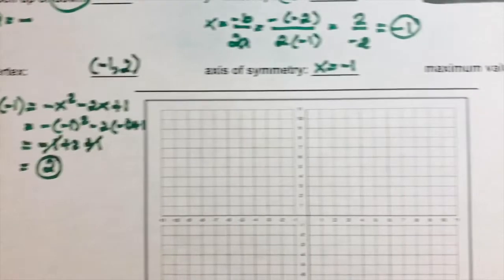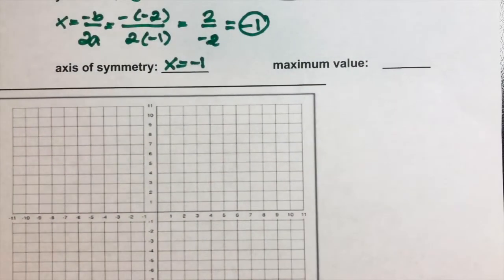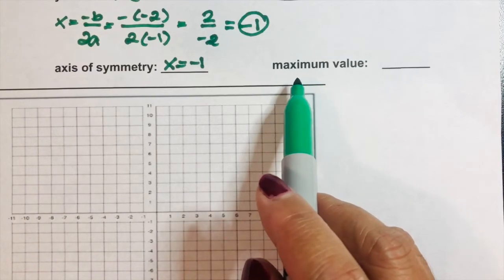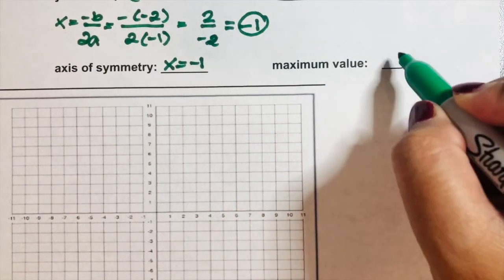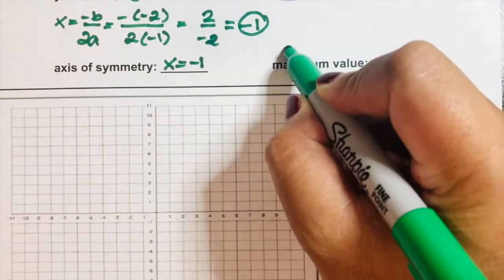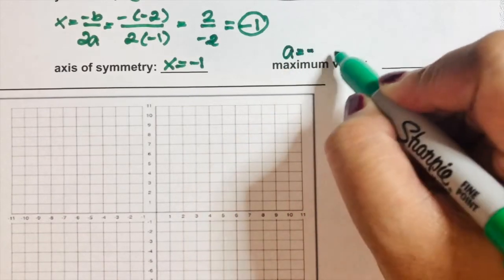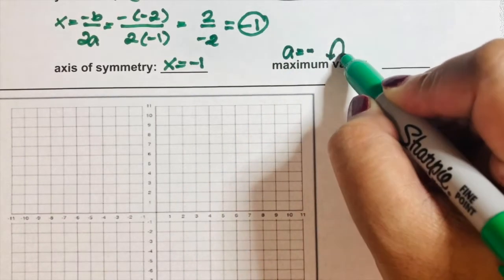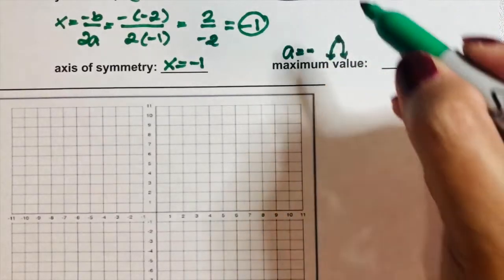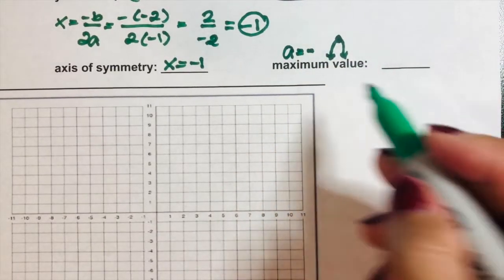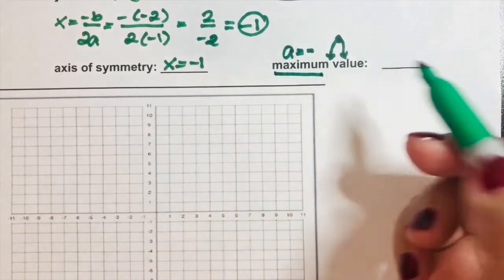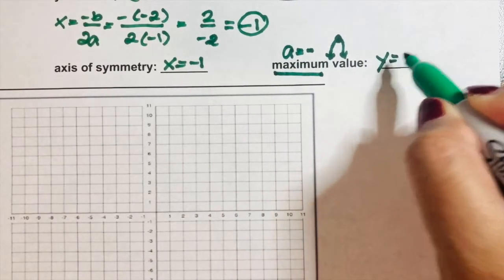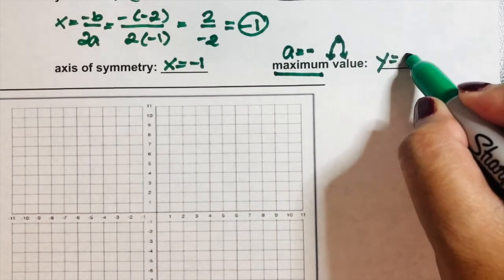Lastly, let's determine the maximum or minimum value. When a is negative, the graph opens downward and the vertex is on top, so we have a maximum value. The maximum value is the y-coordinate of the vertex, which is 2.